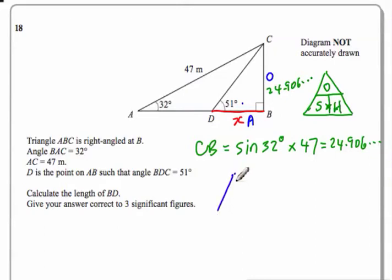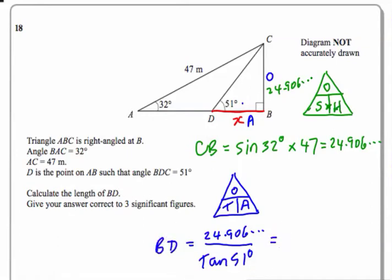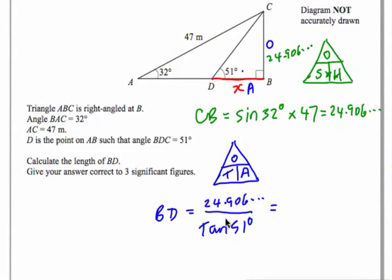Tangent — so I do my little TOA triangle. This tells me that to find A, I do the opposite divided by the tangent. So I'm going to do the opposite — 24.906 and so on — divided by the tangent of 51 degrees. This gives me the side I'm after, which is BD. Keeping the full value in my calculator and dividing by tan 51, I get 20.16864748.